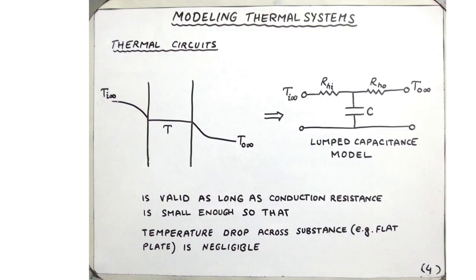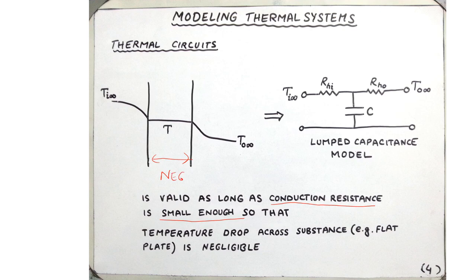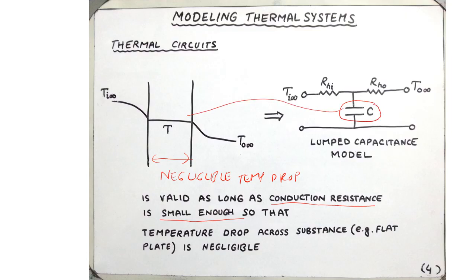This specific thermal circuit is valid under certain assumptions. The first is that the conduction resistance is small enough that there is negligible temperature drop inside the substance. This allows us to assume a single lumped capacitance model, so the circuit contains only the capacitance — reflecting heat storage — and the convection resistances RHI and RH0, with no conduction resistance appearing in the circuit.